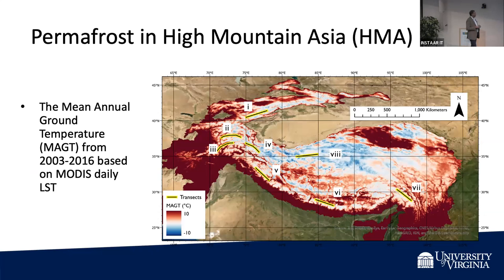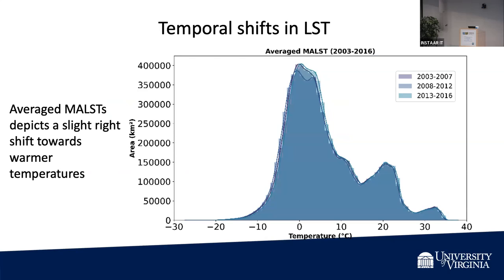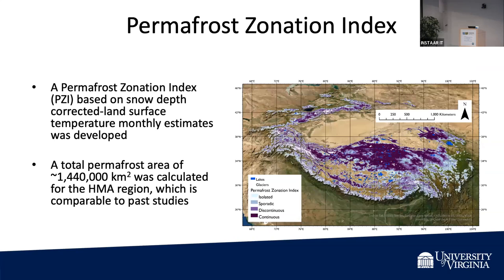Permafrost. This is a simple map of mean annual ground temperature from MODIS for a 14-year period. The mean annual ground temperature varies widely, and it also shows a very nice shift — the distribution is moving more to the right, which means periods are getting warmer. Most permafrost zonation is based on climatology; this is based on actual satellite observations. We produced a permafrost zonation index that compares well with past studies but shows significant differences. This is currently being reviewed.